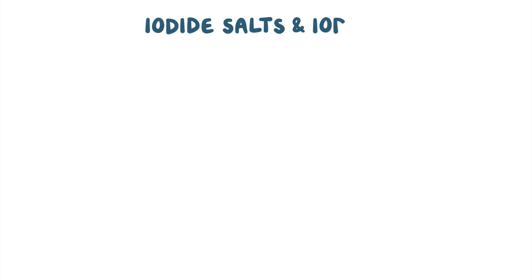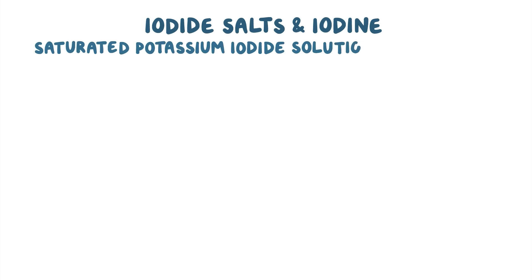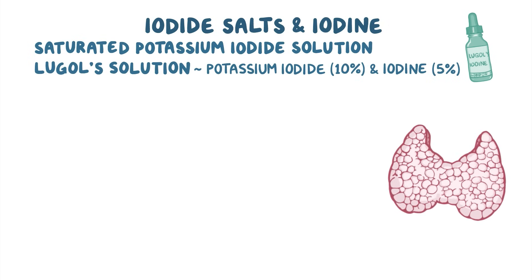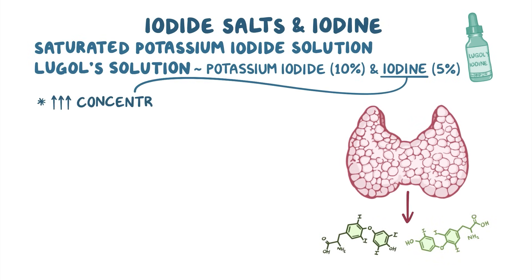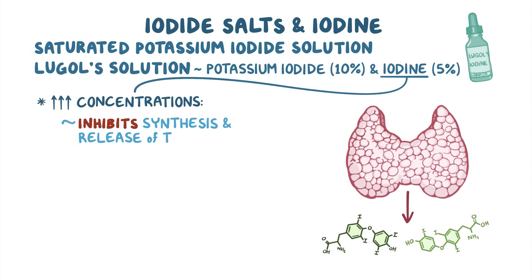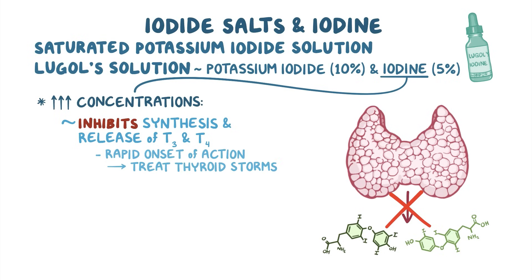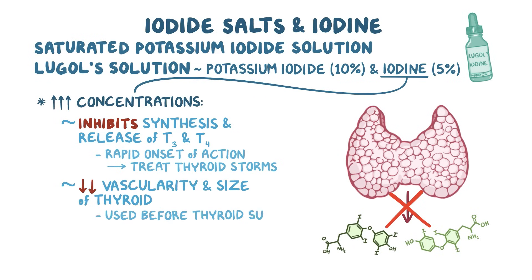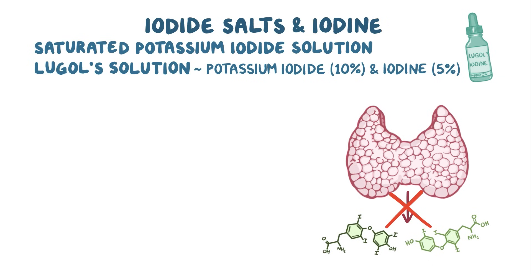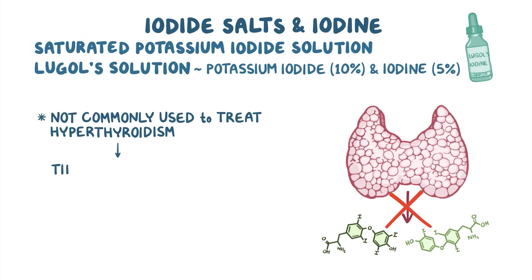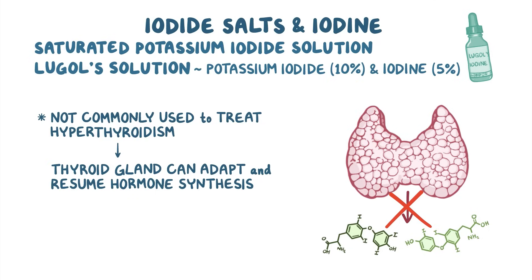Moving on to iodide salts and iodine. Here we have a saturated potassium iodide solution and a solution of potassium iodide 10% and iodine 5%, also known as Lugol's solution. Although iodine is needed for the synthesis of thyroid hormones, in higher concentrations it actually inhibits the synthesis and release of T3 and T4 into the circulation. In contrast to methimazole and propylthiouracil, these medications have a rapid onset of action, therefore they are used to treat thyroid storms. In addition, high levels of iodine decrease vascularity and the size of the thyroid, so it's commonly used a few days before thyroid surgery to reduce the risk of severe bleeding and improve visualization of important structures during the operation. These medications are not commonly used to treat hyperthyroidism long-term since the thyroid gland can adapt and resume hormone synthesis after the initial few weeks of treatment.